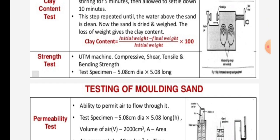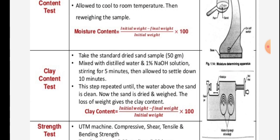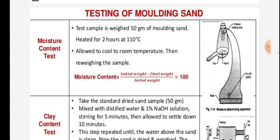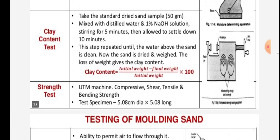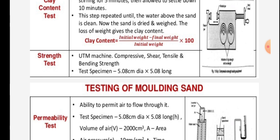Next, we will see the strength test. The Rotoium machine is used for compressive, shear, tensile, and bending tests. The test specimen is 5.08 cm diameter by 5.08 cm long.